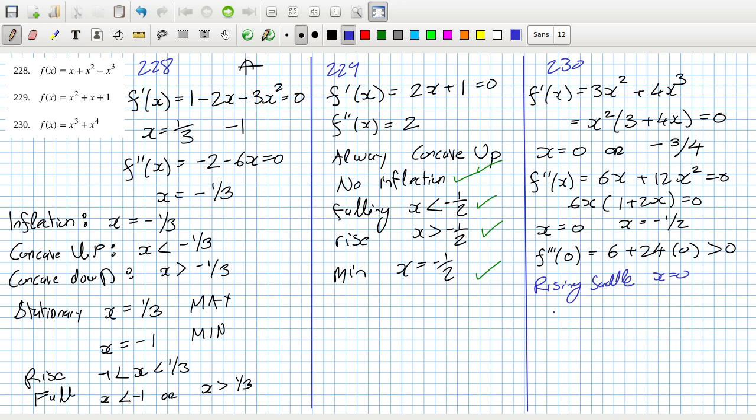When x equals minus 3 over 4, if you put minus 3 over 4 into the second derivative, what do we get? Let's have a look. You get a positive, so that makes it a minimum.